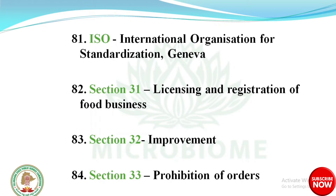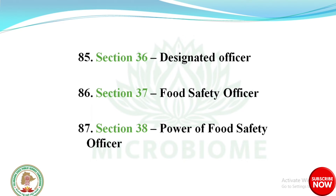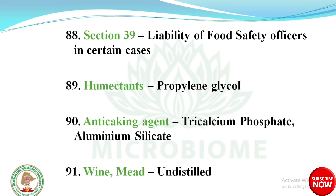Section 31: Licensing and Registration of Food Business. Section 32: Improvement. Section 33: Prohibition of Orders. Section 36: Designated Officer. Section 37: Food Safety Officer. Section 38: Power of Food Safety Officer. Section 39: Liability of Food Safety Officers in Certain Cases. Humectants example: polypropylene glycol. Anti-caking agents examples: tricalcium phosphate and aluminium silicate.